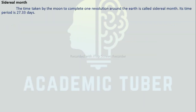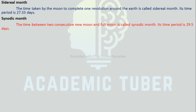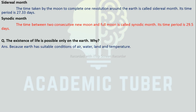Sidereal Month: The time taken by the Moon to complete one revolution around the Earth is called the Sidereal Month, and its time period is 27.33 days. Synodic Month: The time between two consecutive new moons and full moons is called the Synodic Month, and its time period is 29.5 days.